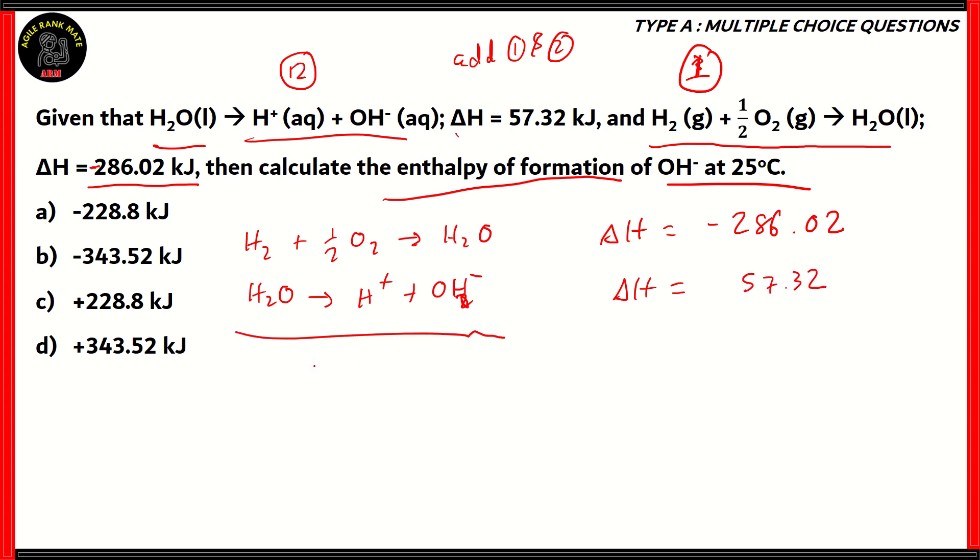Now, when we add the equations, you get H2 plus half O2 plus H2O. Left-hand sides stay together. And the right-hand side is H2O plus H+ plus OH-. Since there's one water molecule on both sides, that can get cancelled. Therefore, the final equation would read H2 plus half O2 gives H+ plus OH-.